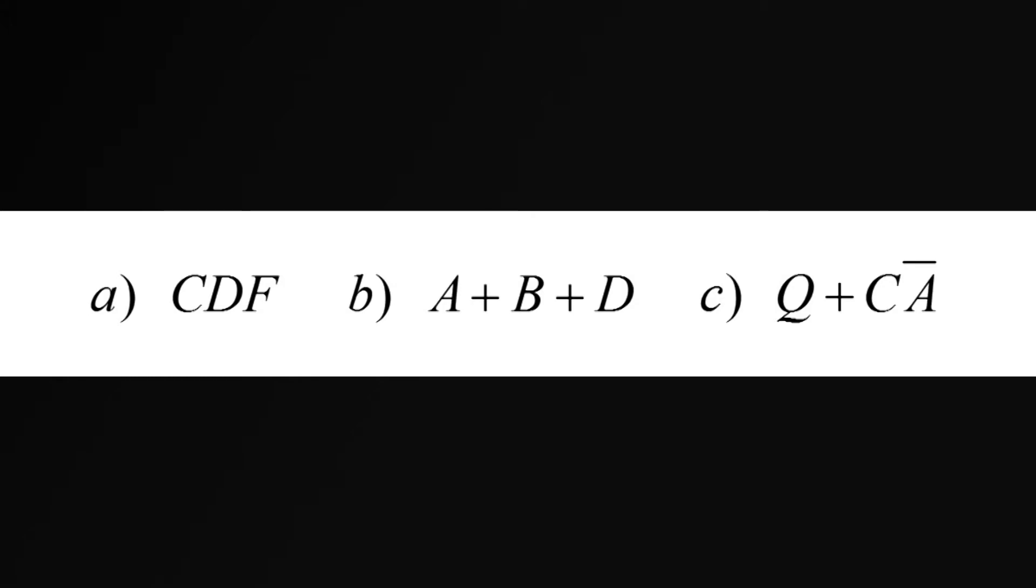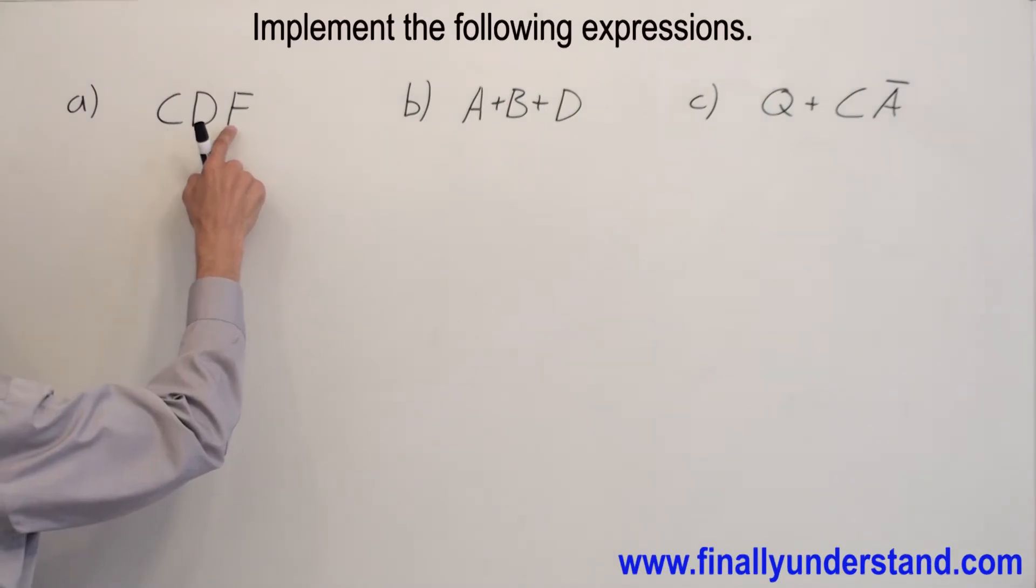Let's implement these expressions. We have C and D and F. This is nothing else, just the three input AND gate.